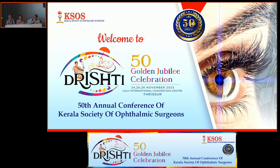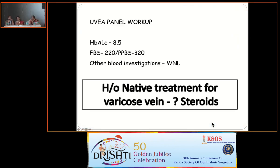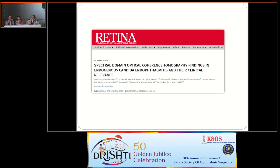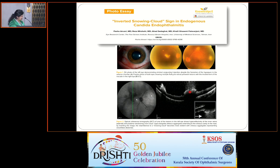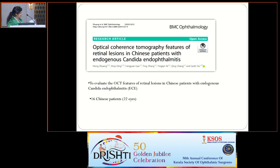The inverted snowing sign was published in a photo essay subsequently. The original rain cloud sign was published in 2018, and in the photo essay the image was inverted — they described it as the inverted snowing sign. There is also one classification for this with four types.